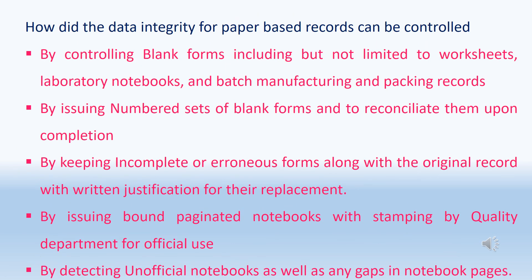How is data integrity for paper-based records controlled? Data integrity for paper-based records can be controlled by: controlling blank forms including worksheets, laboratory notebooks, batch manufacturing and packing records; issuing numbered sets of blank forms and reconciling them upon completion; retaining incomplete or erroneous forms along with the original record with written justification; issuing bound paginated notebooks stamped by the quality department; and detecting unofficial notebooks or gaps in notebook pages.